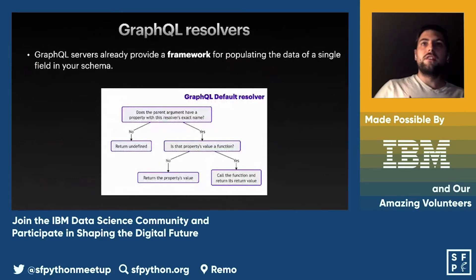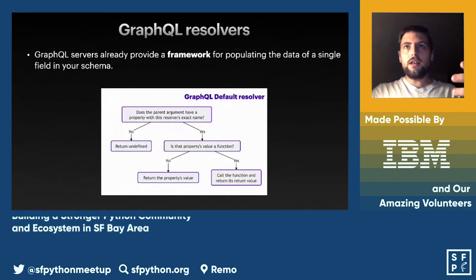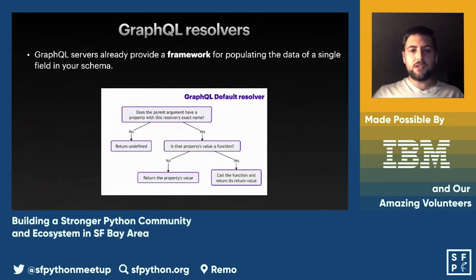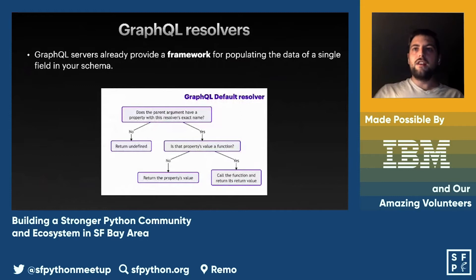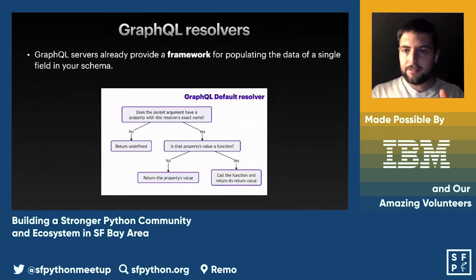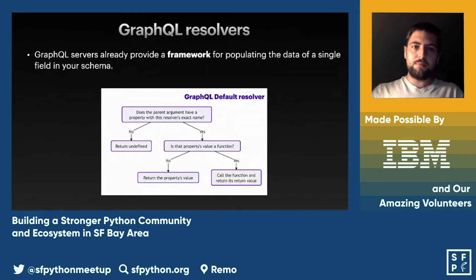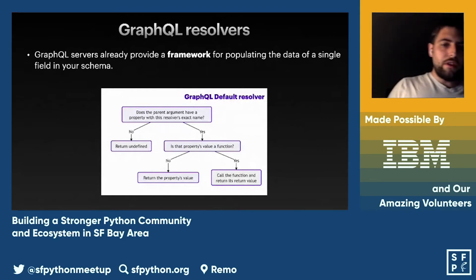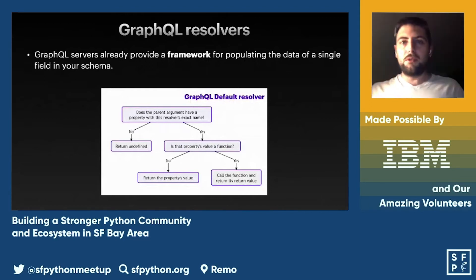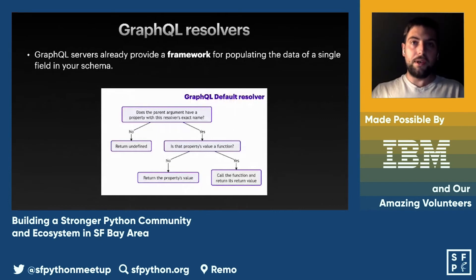We would need to write the hero resolver because that's custom logic — a Python function returning a dictionary that looks like a Character. However, the name resolver comes for free. GraphQL has a default resolver that, as long as the dictionary you're returning has the field you're selecting in your query, will just return that field automatically.